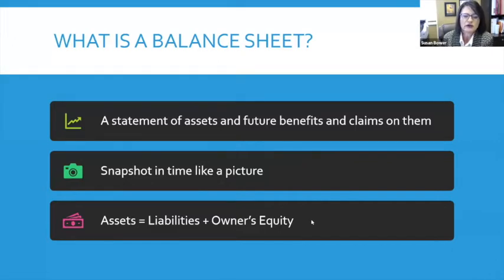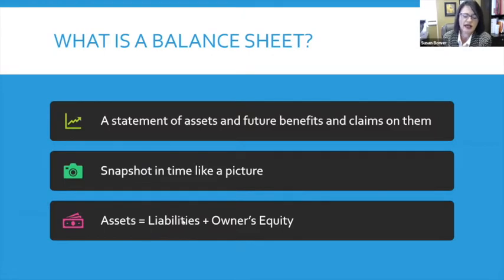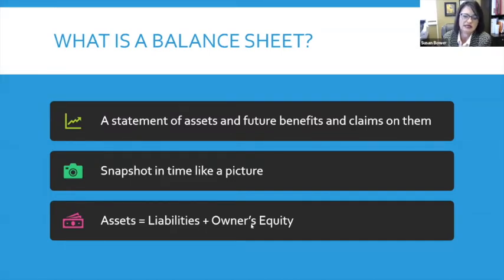The equation for the balance sheet is: assets equal liabilities plus owner's equity. That is an equation that is always true on our balance sheets and always true in our businesses. As assets go up or down, we also see the opposite side — made up of liabilities and equity — also go up and down.